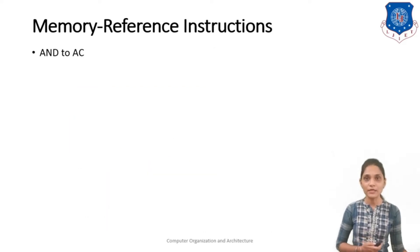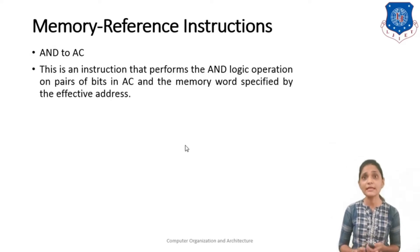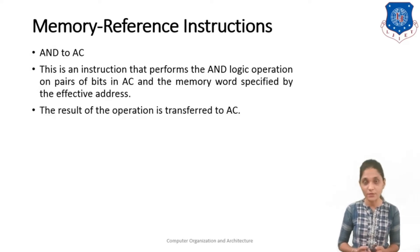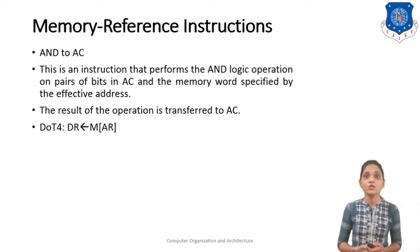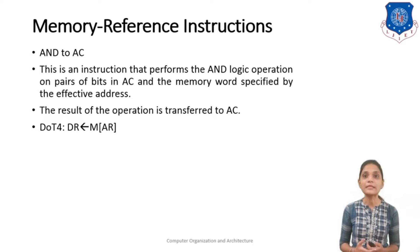Let me see each instruction one by one. The first one is the AND instruction. This performs the AND logical operation on each pair of bits of the accumulator and the memory word specified by the effective address, and the result of this operation is transferred into the accumulator. The condition for this AND instruction is: control signal D0 and timing signal T4, so the condition will be D0·T4 for starting the execution.